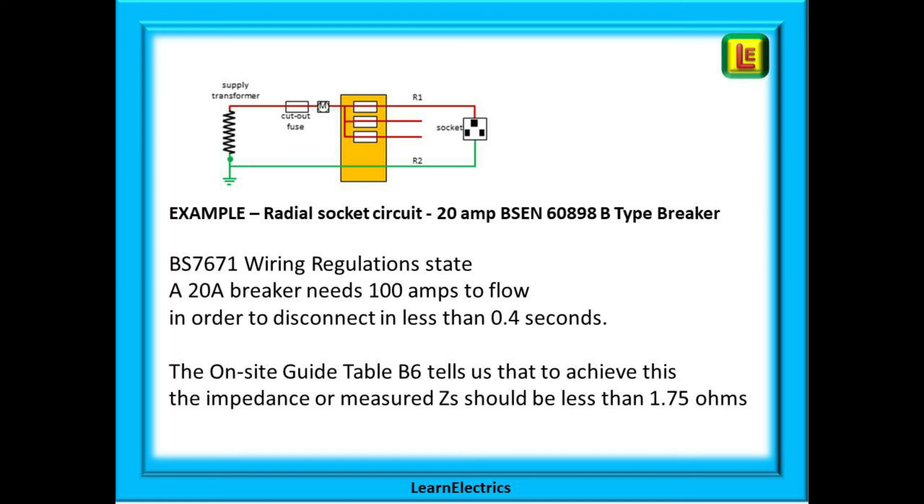These tables have also been adjusted for voltage and temperature variations. All the electrician needs to do is measure the ZS of the circuit and compare the reading on the test meter to the values in the standard tables. If the ZS reading that has been measured is 1.75 ohms or less, then even taking into account voltage and temperature fluctuations, at least 100 amps of fault current will flow and the MCB will trip in 0.4 seconds or less. This will ensure that the circuit complies with the requirements of the electrical regulations for safety.